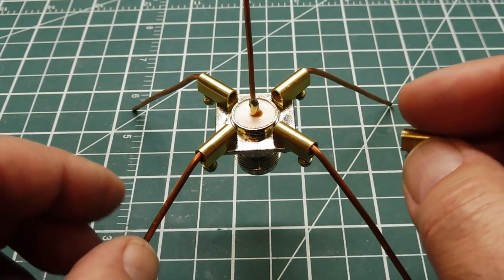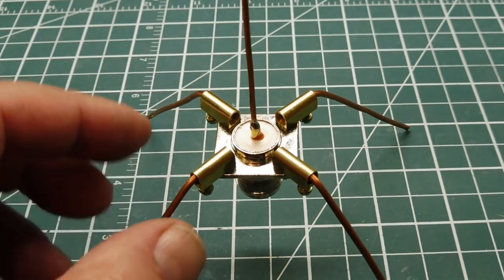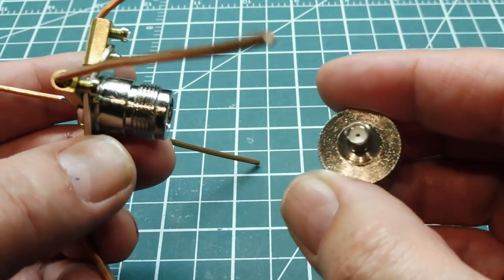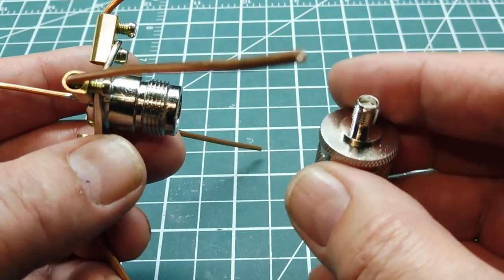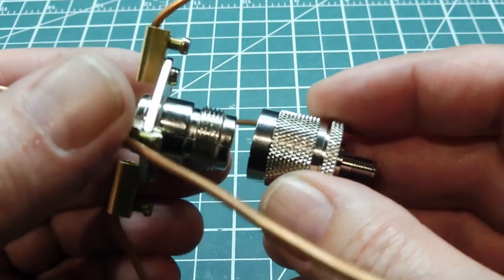So after you build your antenna, now you could get an end connector to SMA, because most likely you're going to have an SMA connector coming out of your LoRa module.